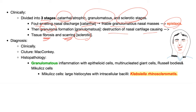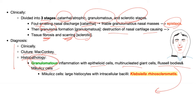Diagnosis is clinical, cultured on MacConkey agar, and histopathology shows a granuloma. The granuloma will have epithelioid cells, multinucleated giant cells, and Russell bodies — because of the immunoglobulins. And of course you can see Mikulicz cells, which are large histiocytes caused by the Klebsiella rhinoscleromatis.